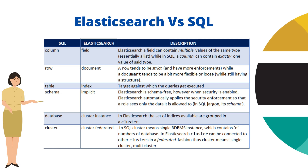A table in SQL is called an index in Elasticsearch. A table is a logical namespace — just a name where the data is stored. So an index is a logical namespace where we are going to store the data, but physically the data is stored in shards. In SQL we have a schema, but Elasticsearch is schema-free or schema-less.